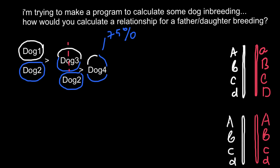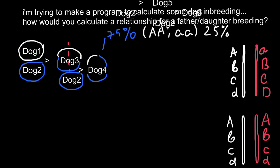So we can say that 75% of the loci of dog number 4 would be in a homozygous state. This is not necessarily homozygous dominant — it can be homozygous recessive. For example, it could be capital A, capital A, or small a, small a. About 75% of the loci of dog number 4 would have two identical alleles, and about 25% would be different — heterozygous. So we can say that the inbreeding coefficient of this dog would be 75%.